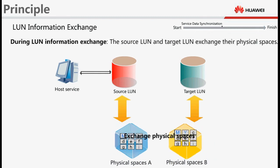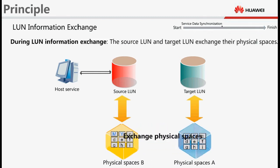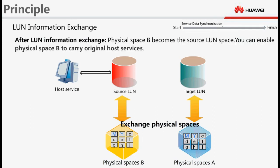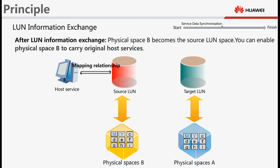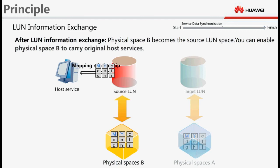During LUN Information Exchange, the source LUN and target LUN exchange their physical spaces. After LUN Exchange, physical space B becomes the source LUN space. During this process, the mapping relationship between the host and source LUN remains unchanged. In this way, you can enable physical space B to carry the original host services.